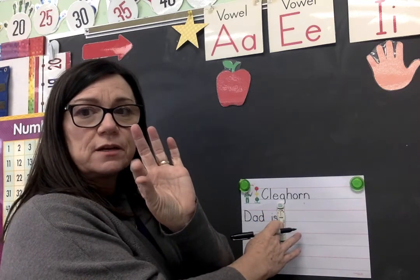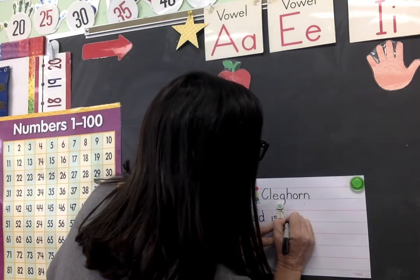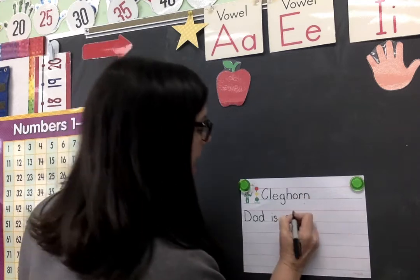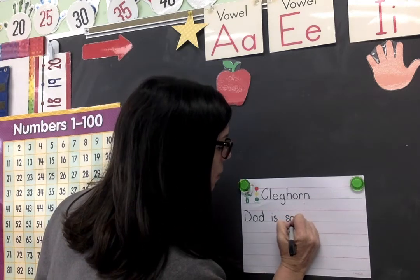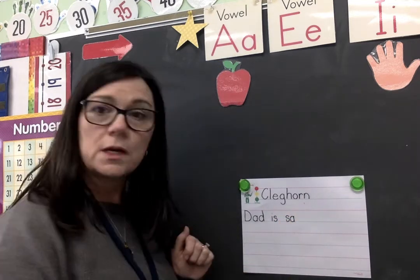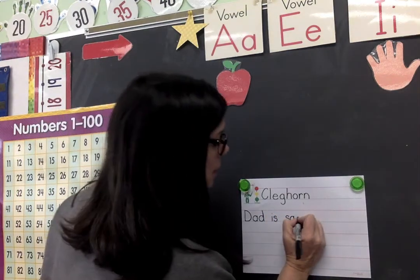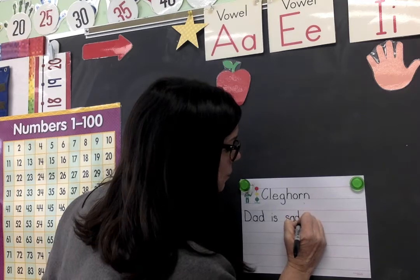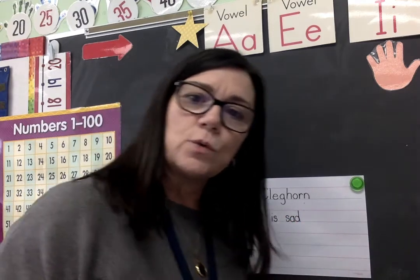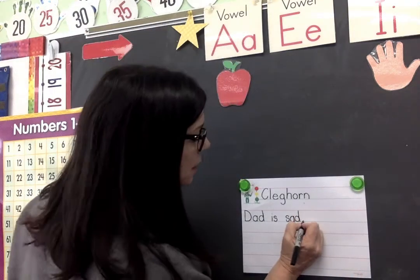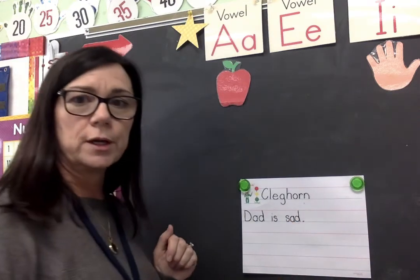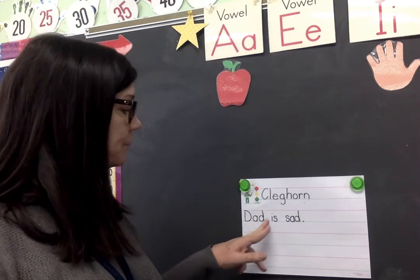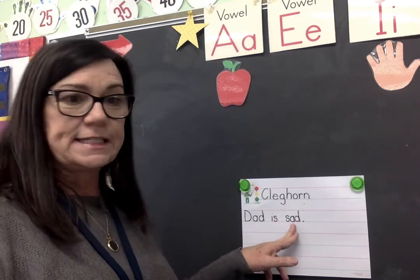Now we need another space, then 'sad.' What's the first sound? S — right there. Now we can remove our spaceman because we have our space. Red hot vowel A. Then make the donut first and you'll make D correctly — up to the red, down to the green. Our sentence is going to fall off the page if we don't put our little period. Rest your hand and make the dot. Let's go back and read our sentence: Dad is sad.